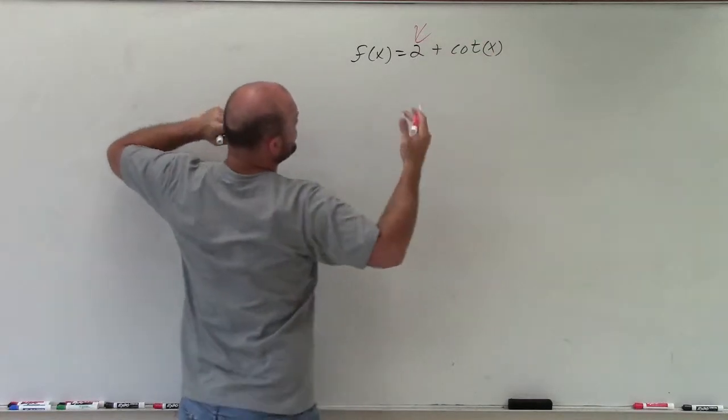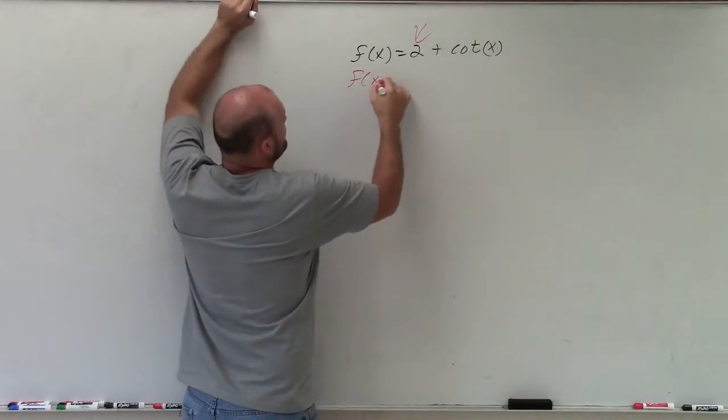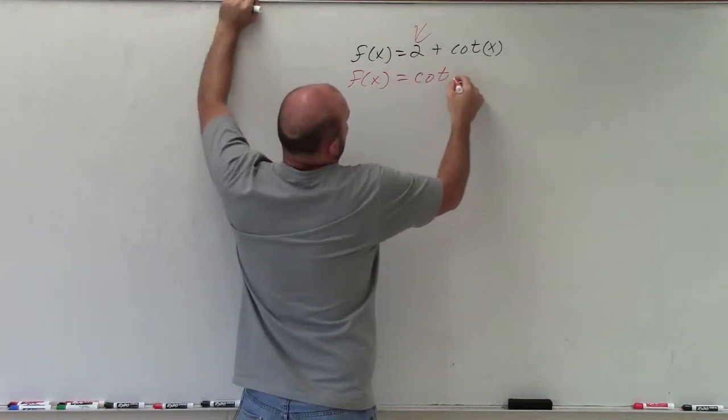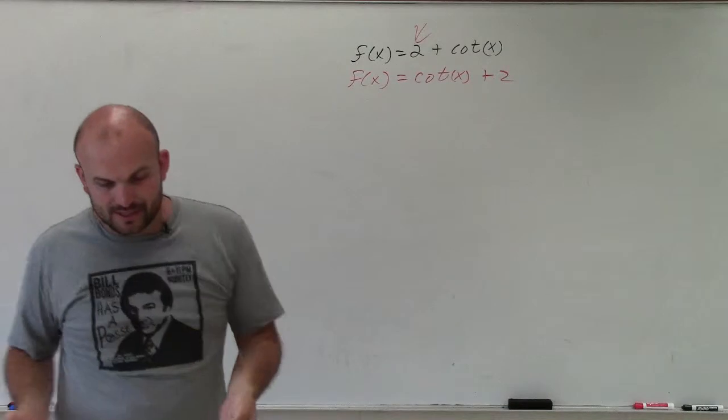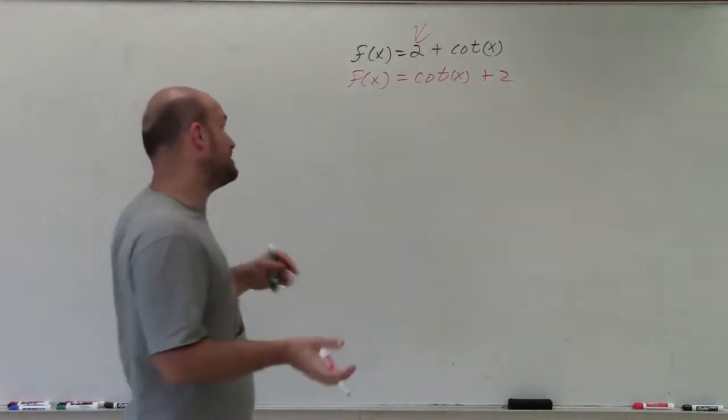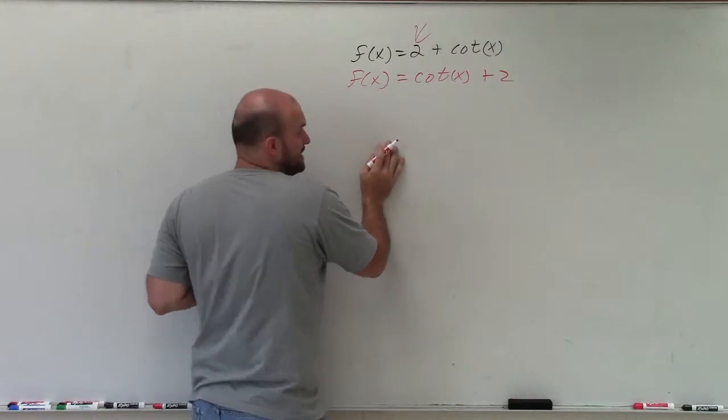So what exactly does 2 + cot(x) represent? Well, the main important thing I want you to understand is I can rewrite this as cot(x) + 2, and that's how I often write the equation. Sometimes we don't like writing the 2 at the end because it can get confused with any phase shift we have.